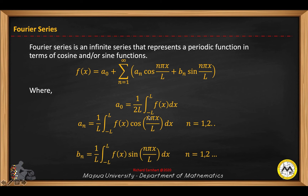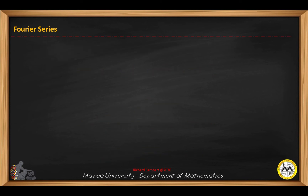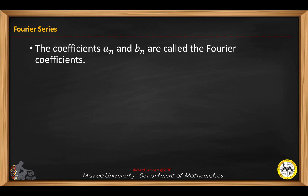For b sub n, this is obtained by evaluating a similar integral. From a sub n, we just replace cosine by the sine function. Also, n will take the values 1, 2, 3, and so on. The coefficients a sub n and b sub n are called the Fourier coefficients.